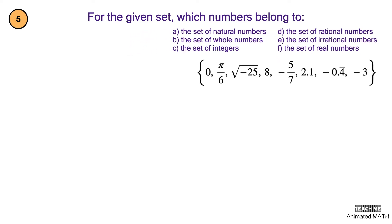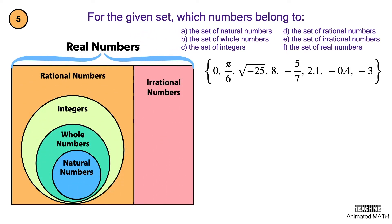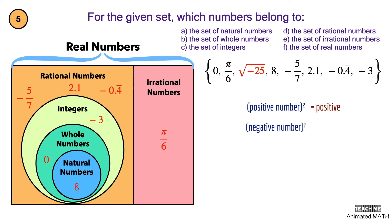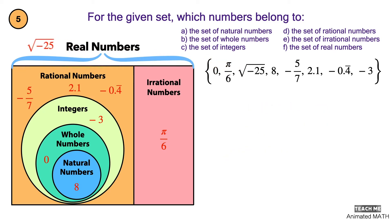Let us take the numbers from the given set and place them on the Venn diagram. 8 is a natural number. 0 is a whole number. Negative 3 is an integer. Negative 5 over 7 is rational, as well as 2.1 and negative 0.4 repeating. Pi over 6 is irrational. On the real number line, when you square a positive number you get a positive number, and when you square a negative number you also get a positive number. So when you take the square root of a negative number, you won't find the result in the set of real numbers. Square root of negative 25 is not a real number.